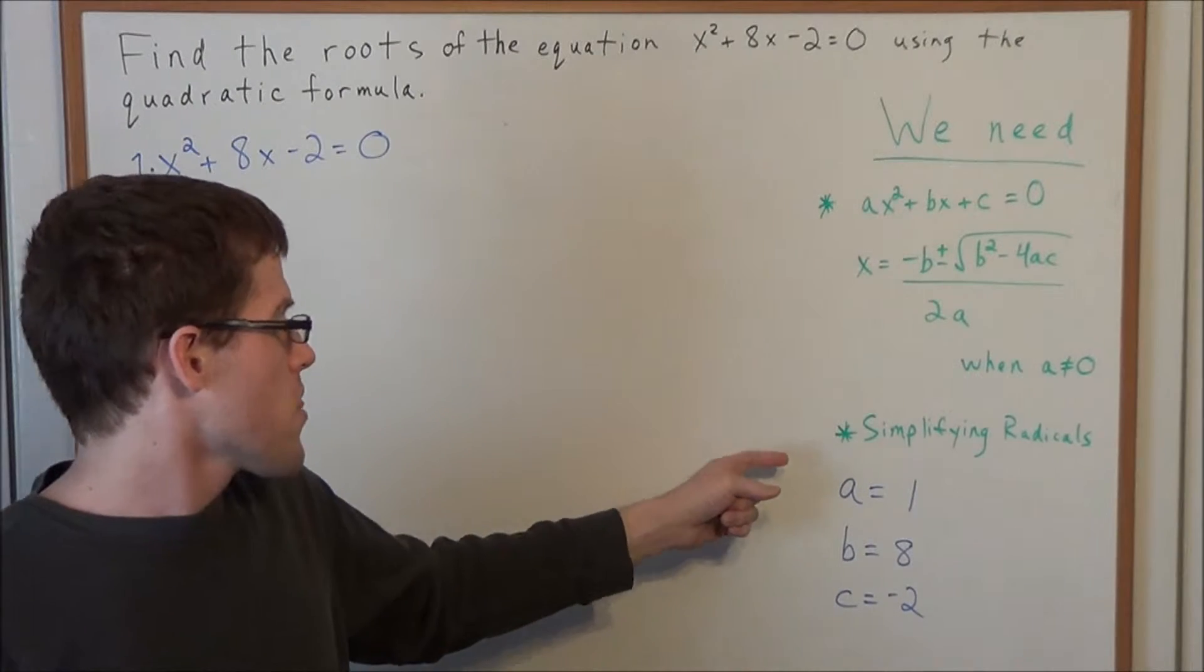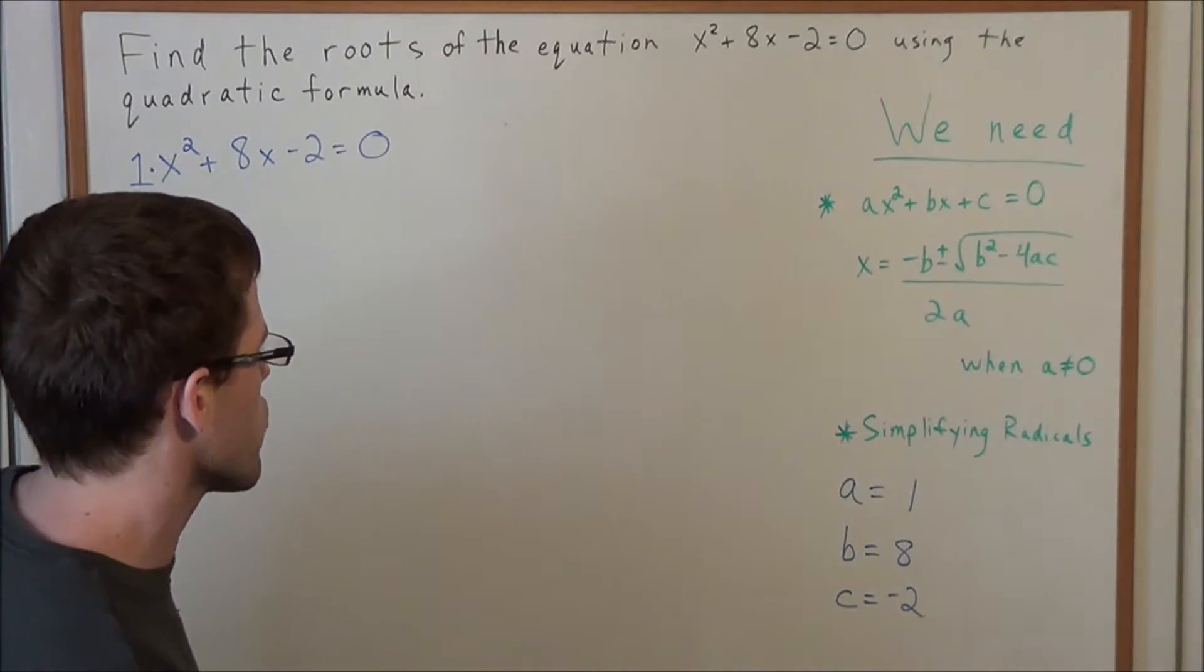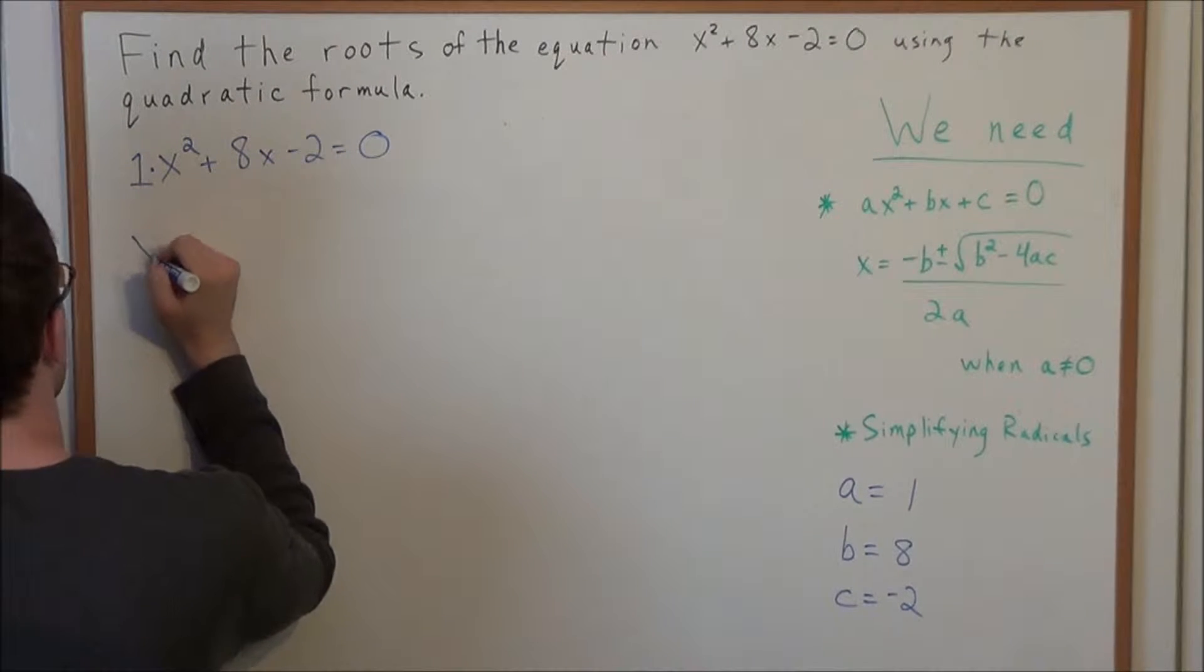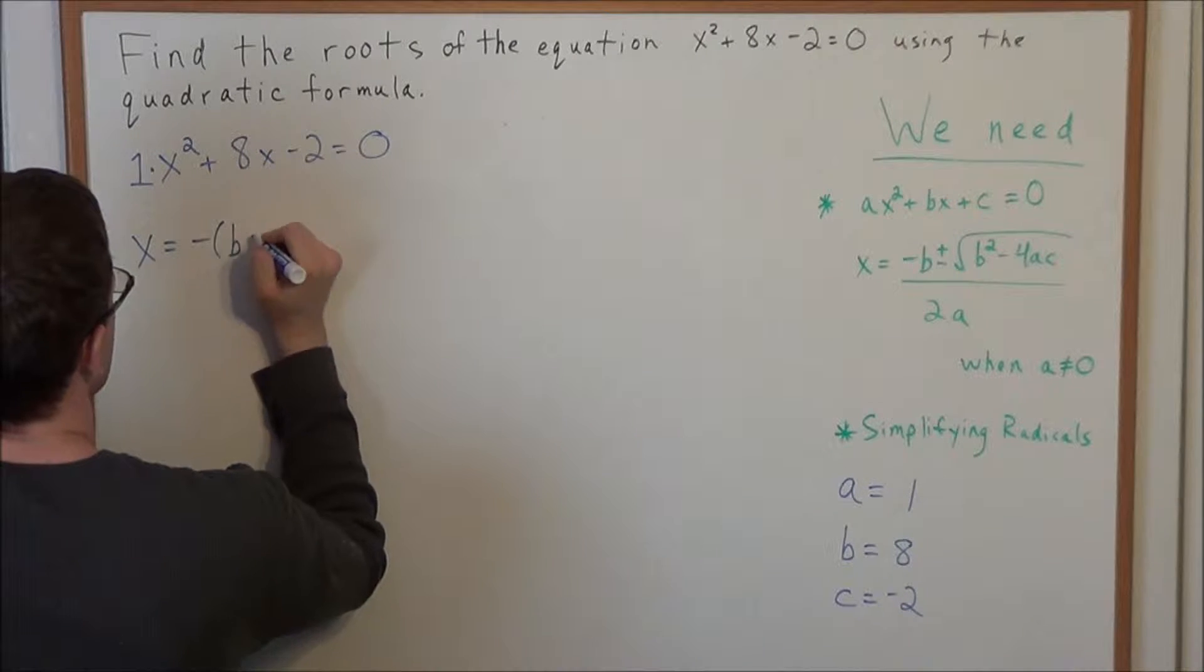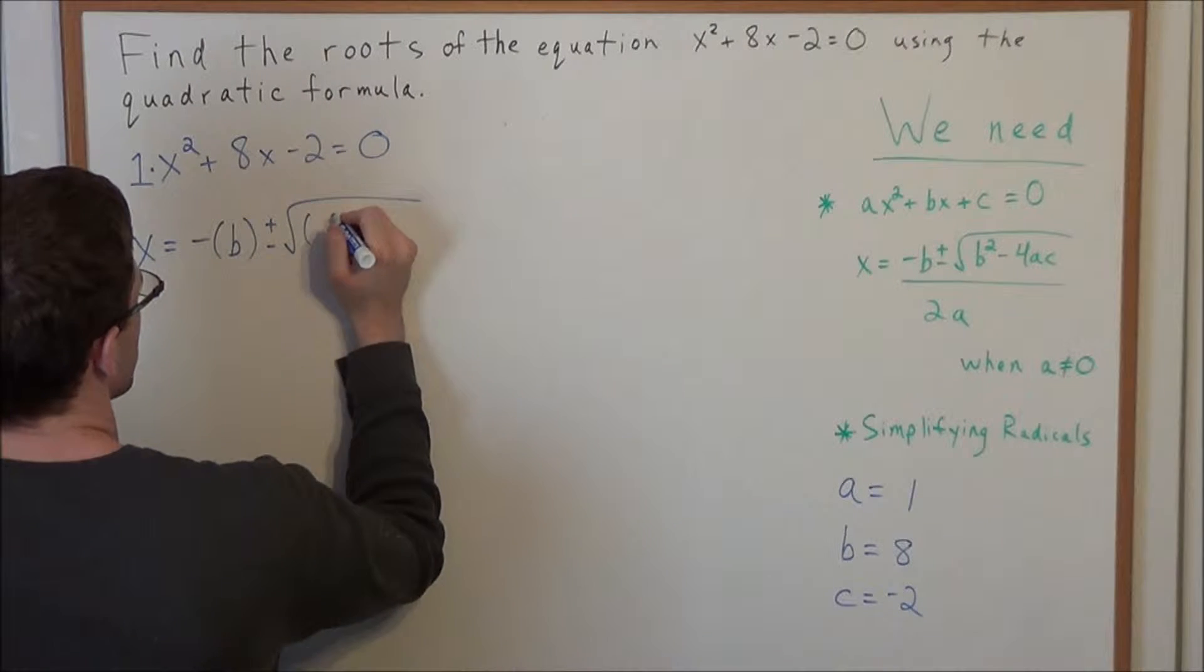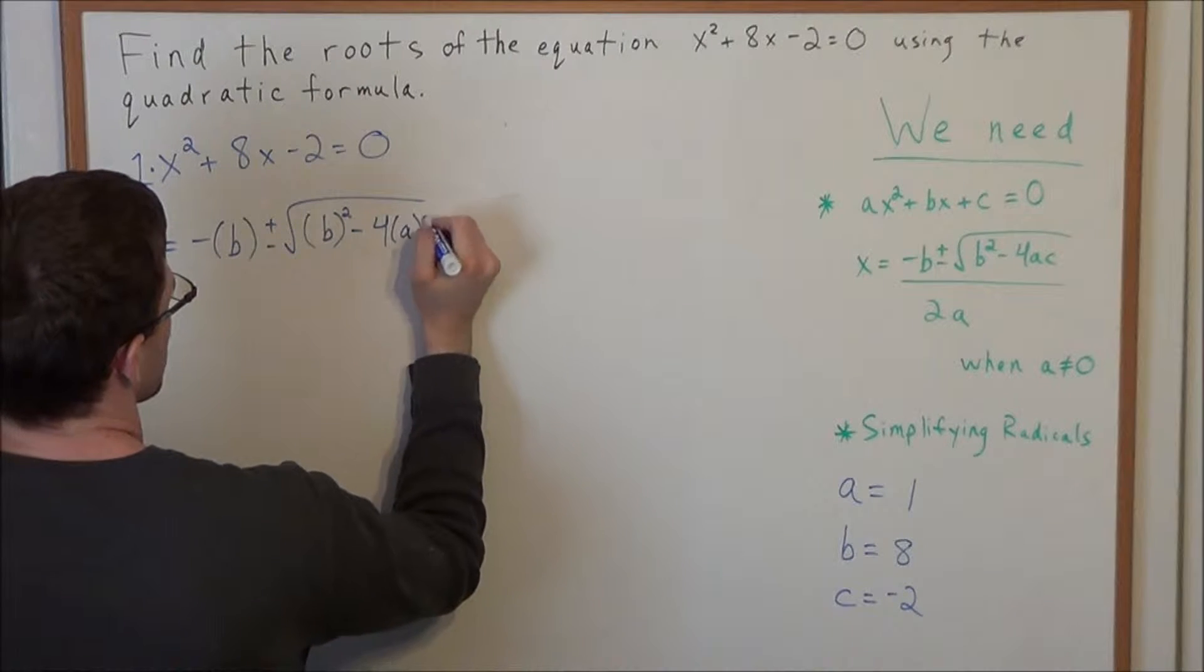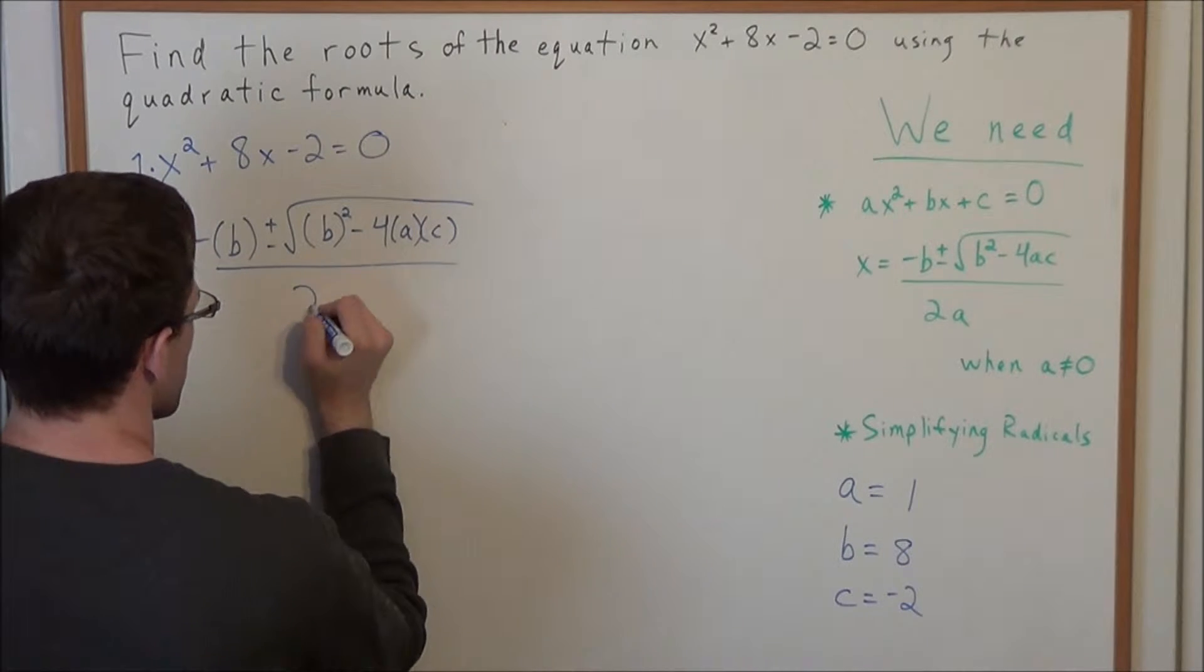So now that we have these three values, a, b, and c, we can go ahead and use the quadratic formula to find the roots of this quadratic equation. So we're looking at x = -b (and I'm going to write it in parentheses to make the substitution easier) plus or minus the square root of b² - 4ac, all divided by 2a.